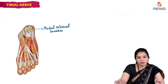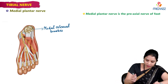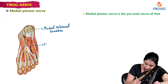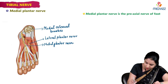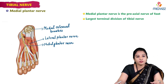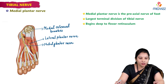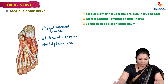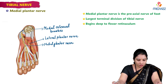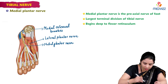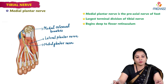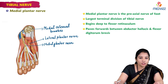The medial plantar nerve is the pre-axial nerve of the foot and it is the largest terminal division of the tibial nerve. It begins deep to the flexor retinaculum — you can see the cut part of the flexor retinaculum here. It passes forwards between the abductor hallucis and flexor digitorum brevis, accompanied by the medial plantar artery on its medial side.